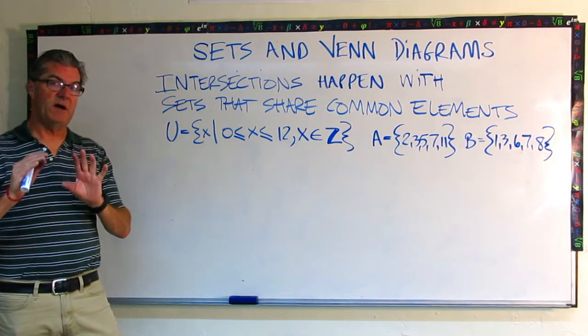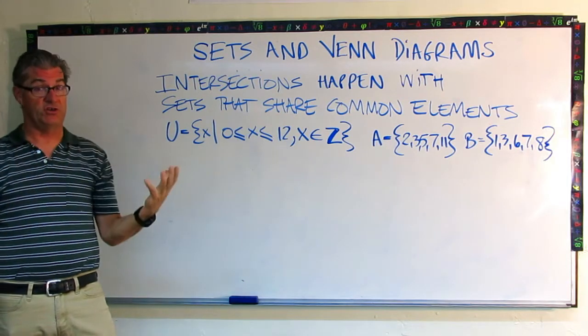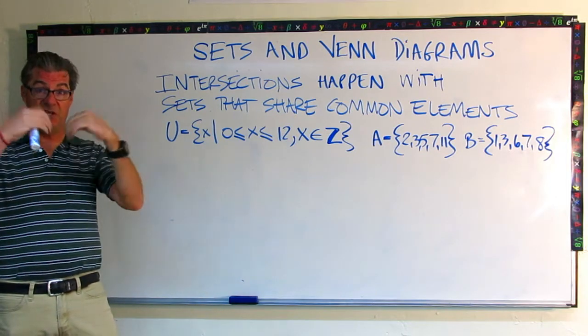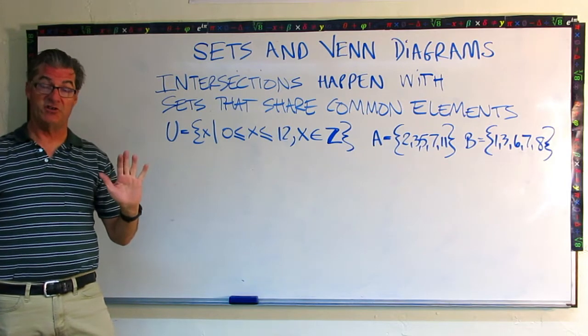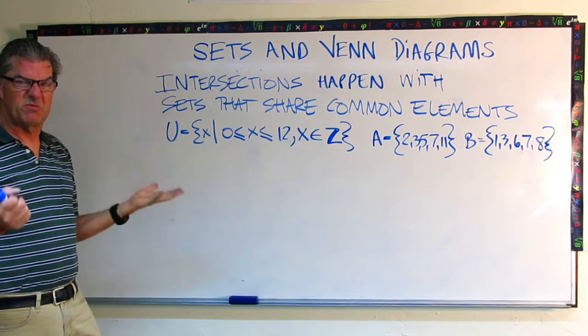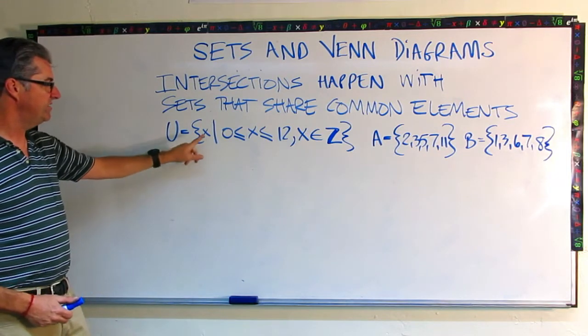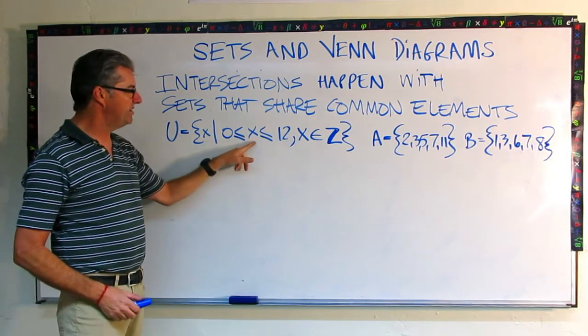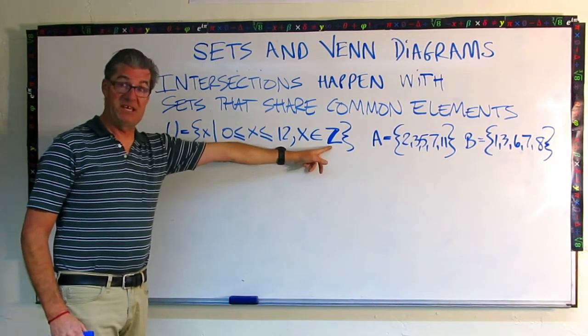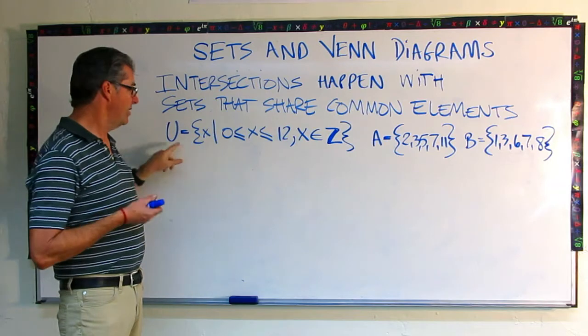So far, we've only talked about sets that have subsets that have all the members that are inside the larger set. Now we're going to talk about intersection. So this is where two sets might share some common elements, but other elements are not shared. So here's a definition for an intersection. They happen with sets that share common elements. That's pretty straightforward. So let's do an example. We're going to use this universal set, set of all X, such that X is greater than or equal to zero, but less than or equal to 12. And X is an element of the integers. So pretty much 0, 1, 2, 3, all the way up to 12. That's what our universal set is.